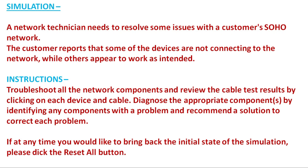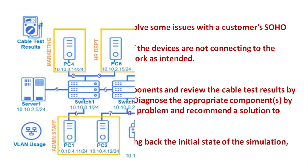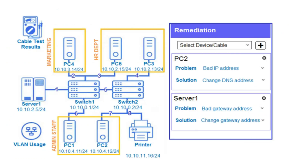Let's check the default diagram for this simulation. As you can see on screen, this is the default diagram. This is PC1, PC2, the admin staff computer, PC4, the marketing computer, PC6, PC5, and PC3 — connected to Switch 2. PC5 is connected to Switch 1. This is the HID department computers, this is Switch 2, this is the printer, and these are the VLANs. This is Server 1 and these are the cable test results.